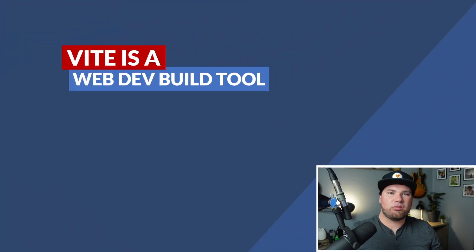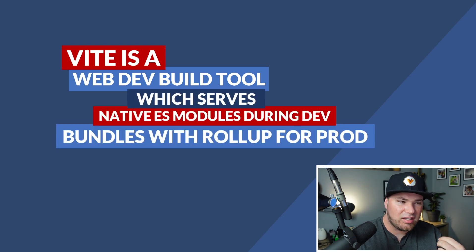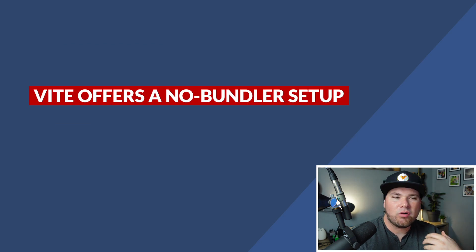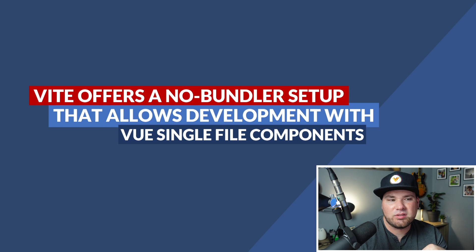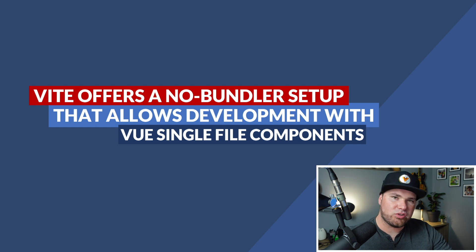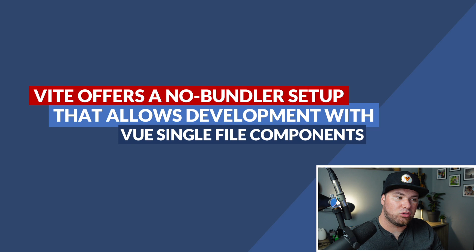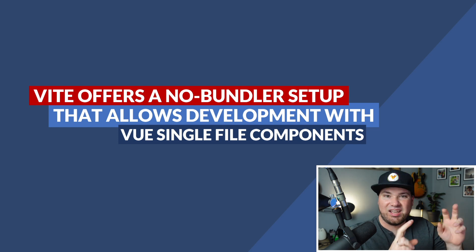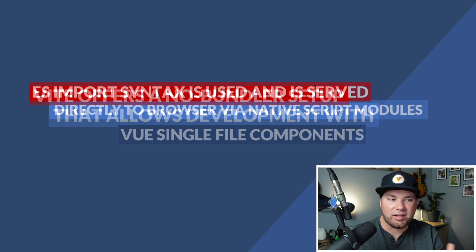So what is Vite? Vite is a web dev build tool that serves native ES modules during development but bundles them with Rollup for production. It offers a no-bundler setup that allows development with Vue single file components. The ES import syntax is used directly, but you also want it to be smart enough to compile things — like your Vue single file component or your JSX.